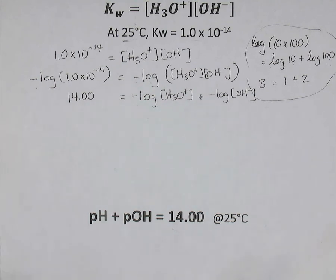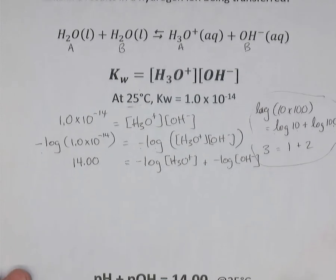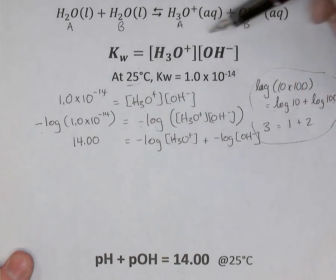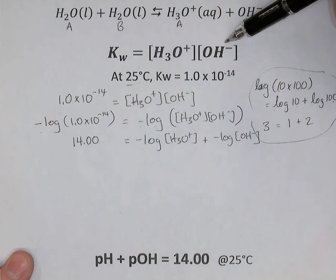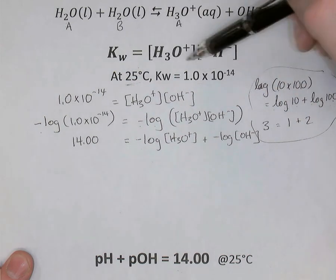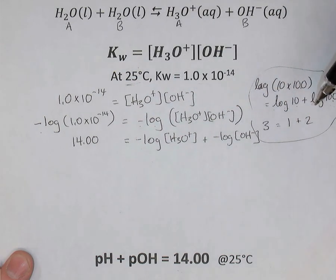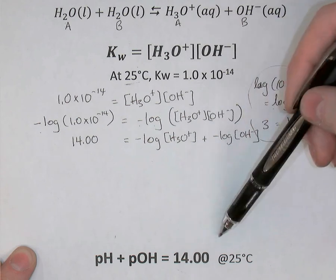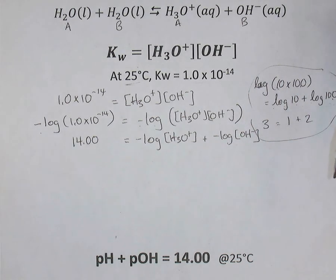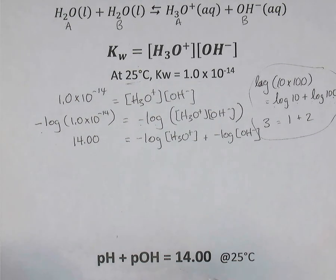All right, so there's two useful equations that we're going to use a lot in this unit. The first is the KW expression. Hydronium concentration times hydroxide concentration gives me KW, and that number is 1.0 times 10 to the minus 14 at 25 degrees. And finally, if you know the pH, you could add it to the pOH to get 14 at 25 degrees Celsius. All right, now I'm not sure if we've talked about this before, but pOH, you recall, is very much like pH. It's just the negative logarithm of the hydroxide concentration.